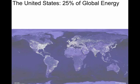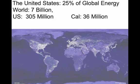The United States uses about a quarter of the global energy. What does that mean? Well, there are about 7 billion people in the world, 300 million in the United States and a tenth of that in California. That means about 5% of the world's population is in the United States and about half a percent in California.